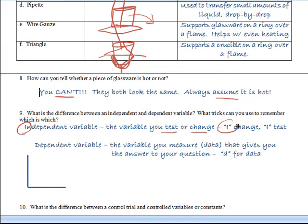Independent starts with an I. This is a variable that you test or you change. So you think, I change this, I test. What do I want to manipulate? And then dependent variable is what you're going to measure that gives you the data that answers your question. So dependent starts with D, data starts with D.